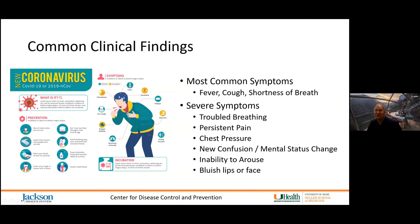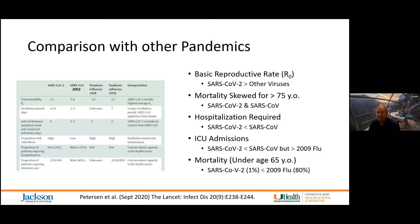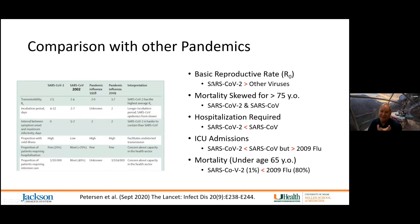Common clinical findings include fever, cough, and shortness of breath. The reproductive rate of COVID-19 is greater than other viruses — it's more easily transmitted. Mortality is skewed for those over age 75.